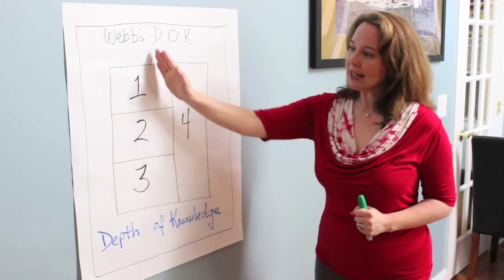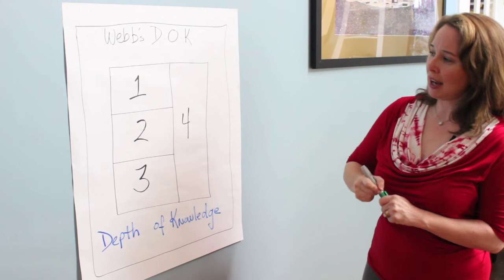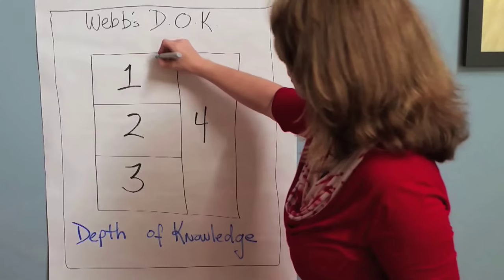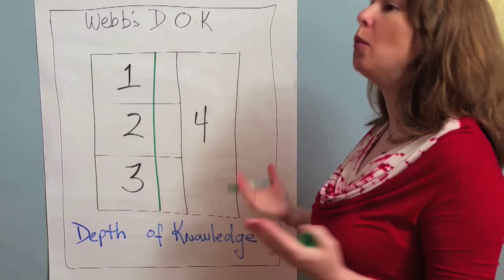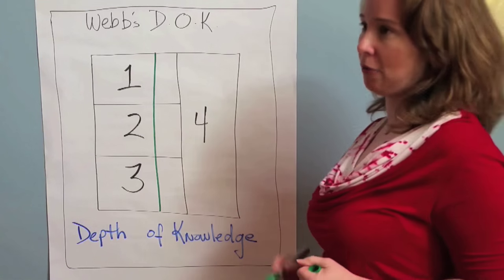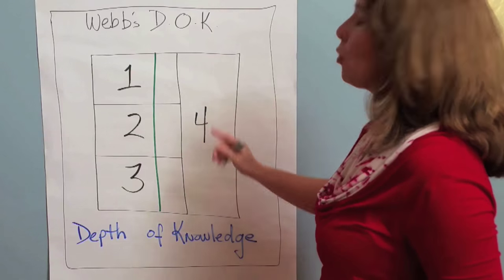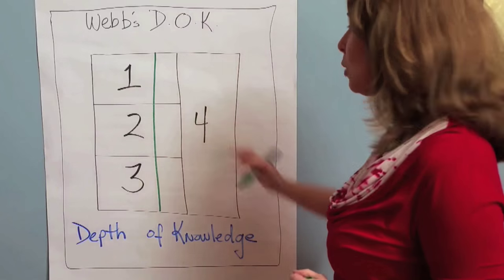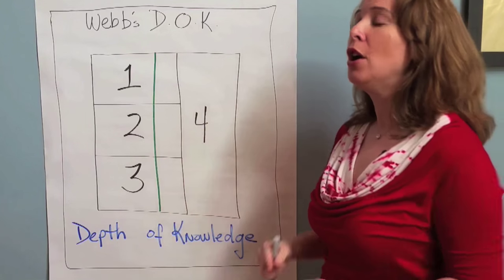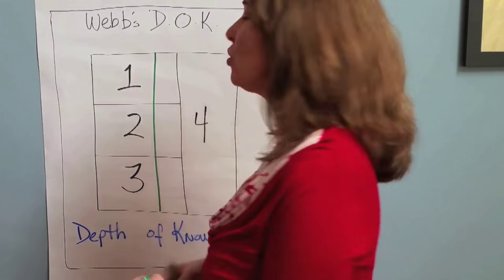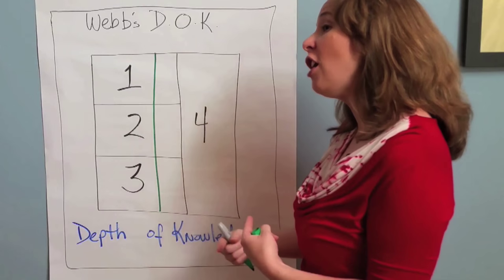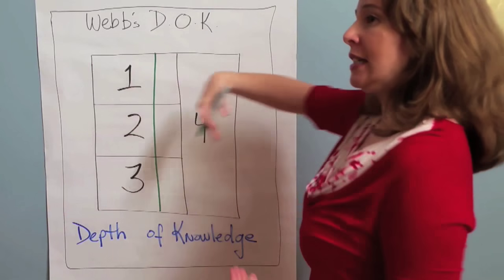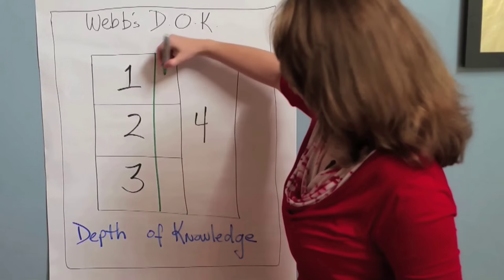So if all of Bloom's Taxonomy is actually located in DOKs 1, 2 and 3, I can find that all right here, then what, pray tell, is DOK 4. So DOK 4 is not harder. It's not some higher level of Bloom's Taxonomy. What it actually is, and those of you who are familiar with heat questions or transfer of knowledge, transference, DOK 4 is actually a sideways shift or a lateral shift.